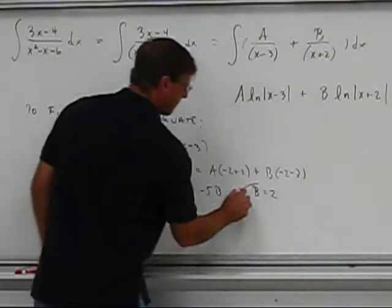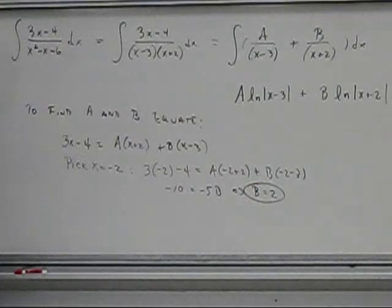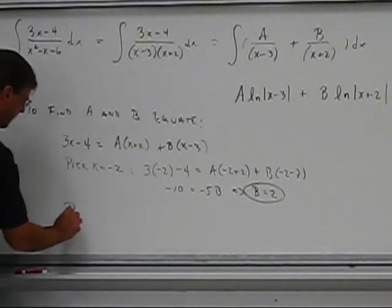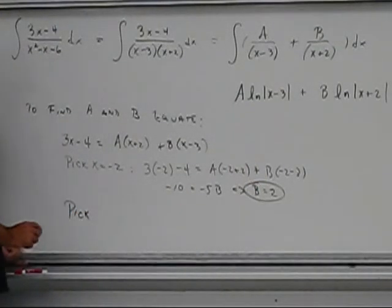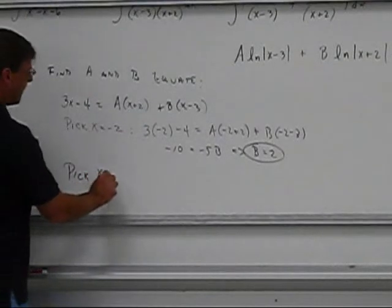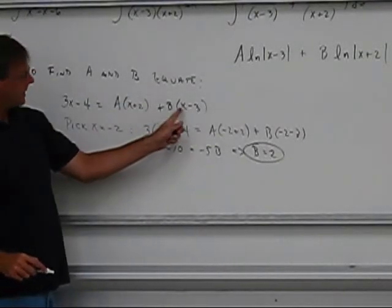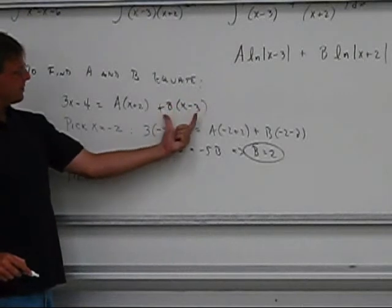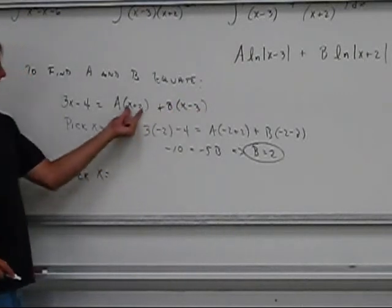Okay, so we have b, let's get a. To get a, what I'm going to do is I'm going to pick x to be the other convenient value. If I pick x equal to 3, then this term will disappear. I'll get a 5 here, and I'll get a 5 over here, so then I'll be able to solve for a.